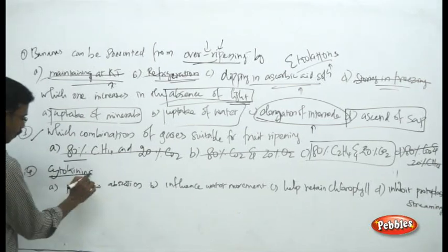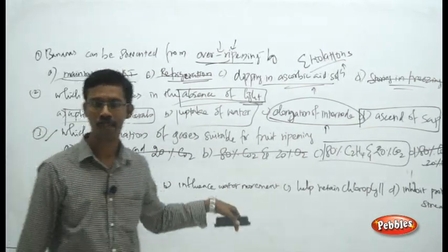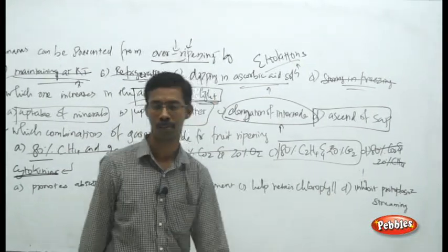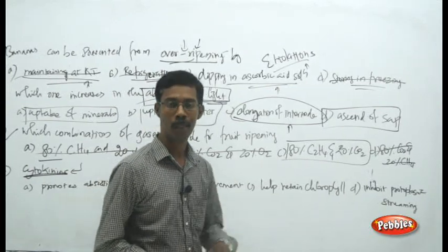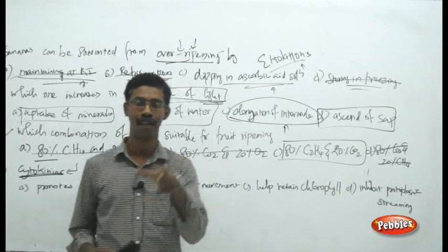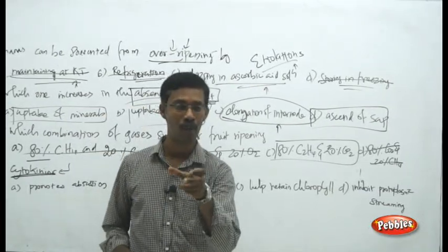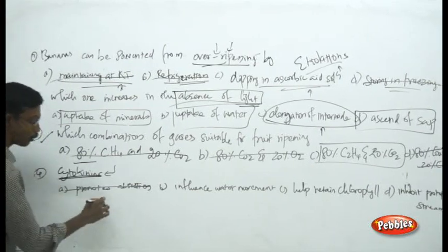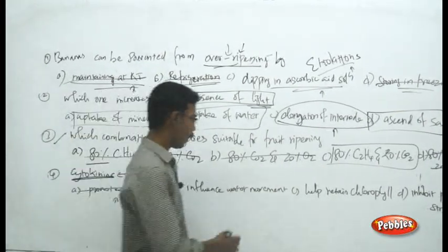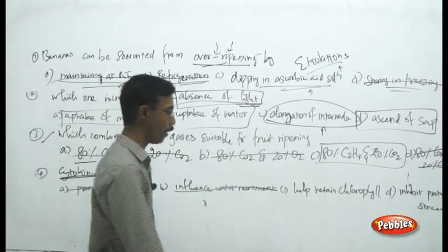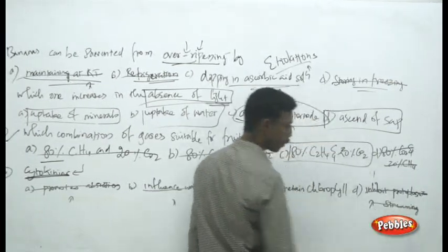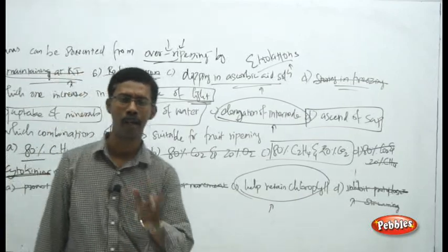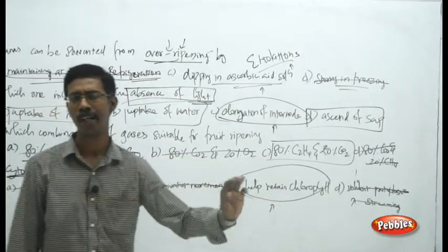The final question: cytokinins — what is their role among the given choices? The choices are promotes abscission, influences water movement, helps retain chlorophyll, and inhibits protoplasmic streaming. Cytokinins are applied to cut or excised leaves to make them fresh or green for prolonged time — they retain chlorophyll and the green nature of the plant. Abscission is promoted by abscisic acid, not cytokinins. Water movement and protoplasmic streaming are not related to cytokinins. Cytokinins always relate to retaining the pigment chlorophyll.